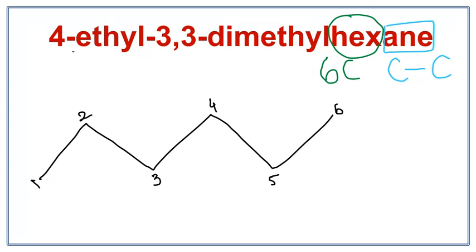We have an ethyl attached on the 4th carbon, which is right here. And we have methyl attached on the 3rd carbon and on the 3rd carbon. So we have 2 methyls attached on the 3rd carbon, which is right here.